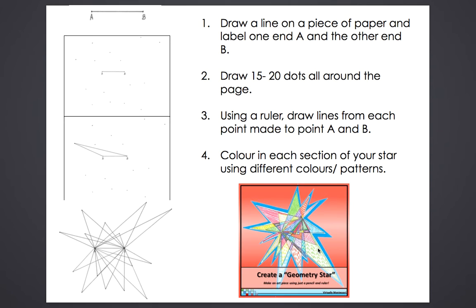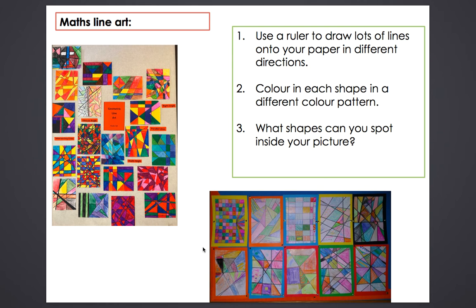Then there's some maths line art. Using your ruler, draw lots of lines in different directions on the page, then colour in each section — maybe with patterns, or in different colours. One example uses different shades of red, pink and purple, which looks really nice — all from drawing lines in different directions. Once you've done it, see which shapes you can spot inside your picture: rectangles, squares, or triangles.